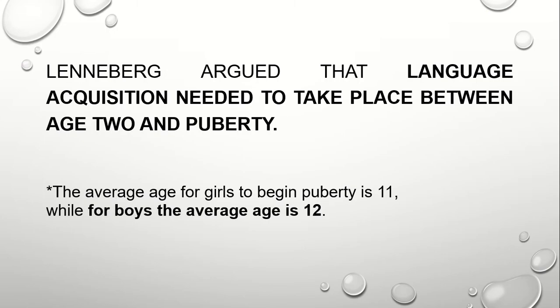Lenneberg argued that language acquisition needed to take place between age 2 and puberty. The average age for girls to begin puberty is 11, while for boys the average is 12. So our instructional materials, learning materials, and teaching styles may need to be adjusted to suit the needs of this age group — from age 2 to 12. We need to be able to implement this in the classroom.